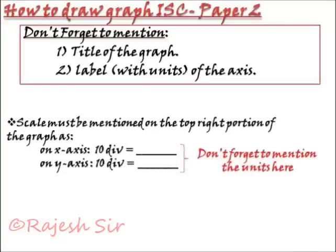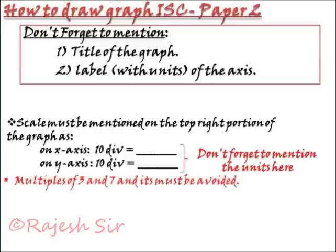One should definitely mention the scale of the graph on the top right portion of your graph sheet and it must be mentioned on x-axis 10 divisions equals to whatsoever the things you are plotting on the x-axis. Let's say if you are plotting U, so you should mention on x-axis 10 divisions must be U whatsoever 2, 4, 5 whatsoever the scale you have got in centimeter. Similarly, the y-axis must also be mentioned.